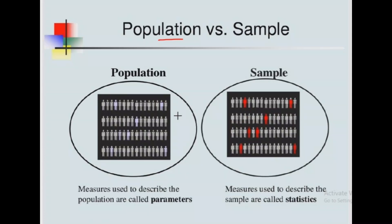To understand population versus sample, consider the following figure. Let's assume the people in this circle represent our total population of interest. In the sample side, those highlighted in red are the individuals selected in our sample — we collect information from those colored red. The measures that describe the population are called parameters, while the measures that describe the sample are called statistics.